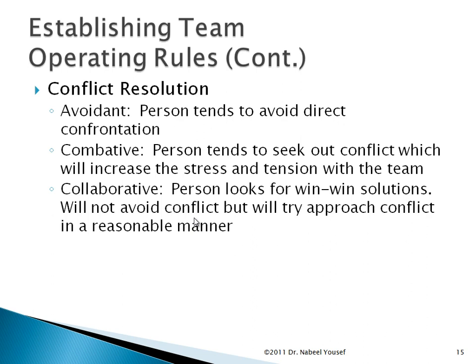In conflict resolution, we have three types of people to deal with: avoidant, competitive, or collaborative. The collaborative person is the best to work with because they look for a win-win solution and will not avoid conflict but will approach it in a reasonable manner. The avoidant person tends to avoid direct confrontation, which is not good because if you have a problem you have to confront it and try to solve it. The competitive person tends to seek out conflict, which increases stress and tension within the team. So we would like to have collaborative team members.